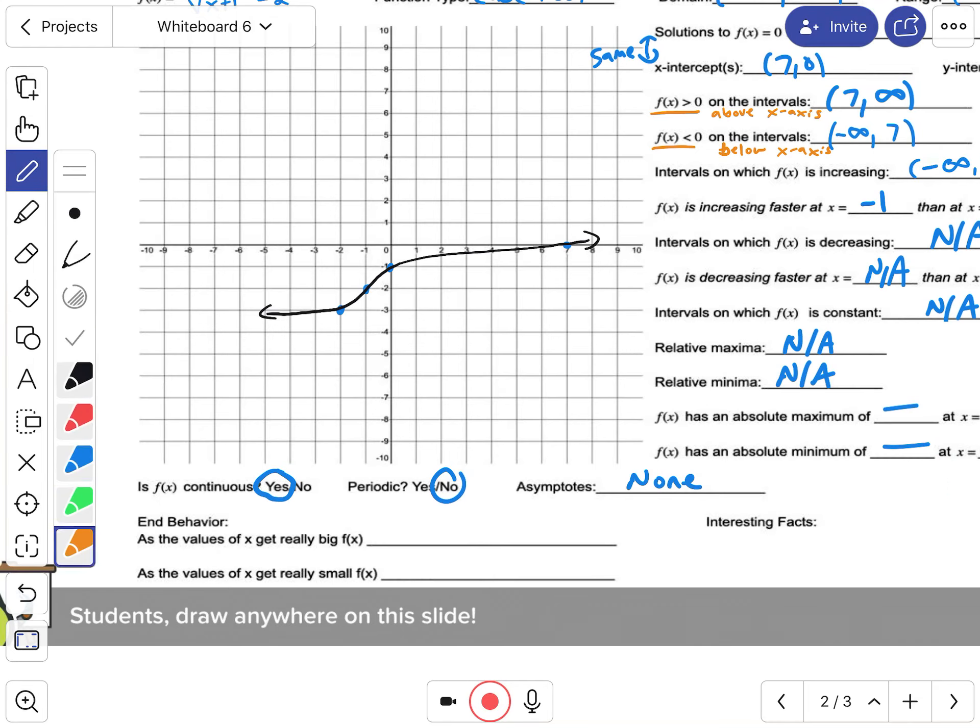Okay, so end behavior. This is just saying as x values get really big—that means positive x values, which is to the right—what is the f(x) doing? What is the y value doing? So as you go to the right, it's going up, so the y value is increasing.